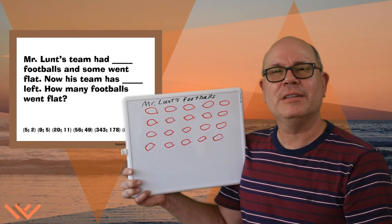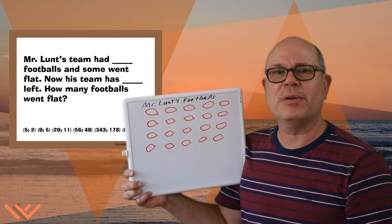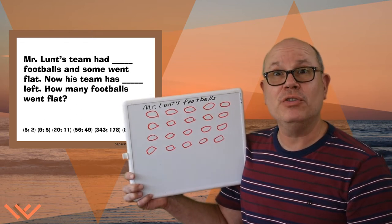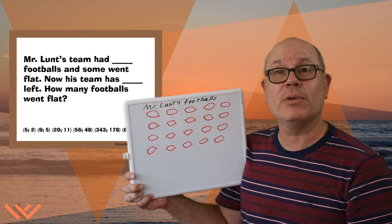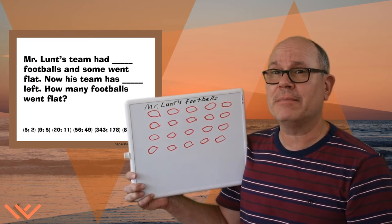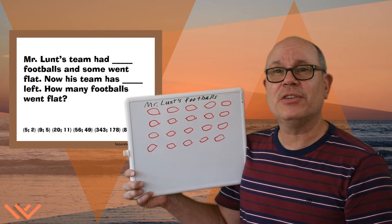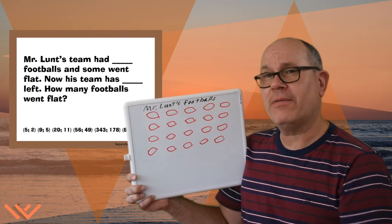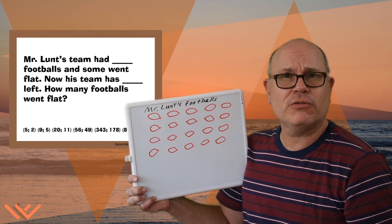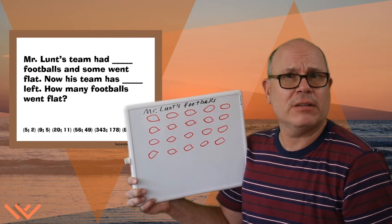Hi, friends. Here's Mr. Lunt's footballs. Now remember, we don't know how many went flat, but we do know how many were left over after a certain number went flat — and that was 11. So if we want to find out how many did go flat, why don't we just cross off the 11 that he has left over?